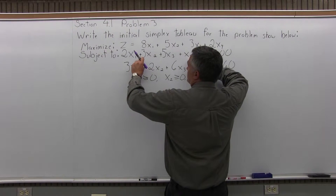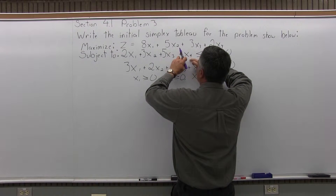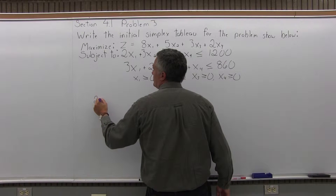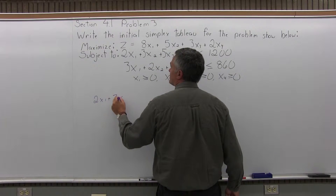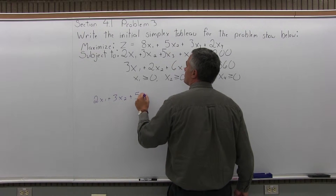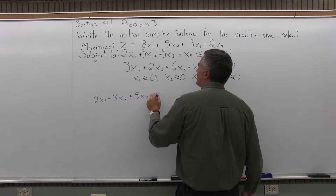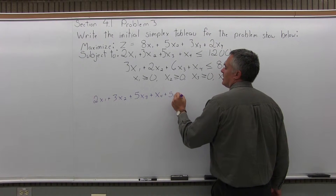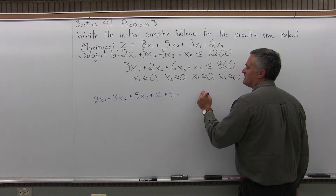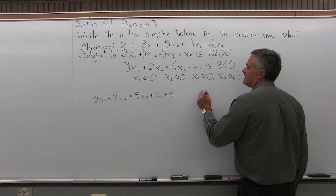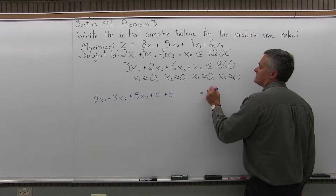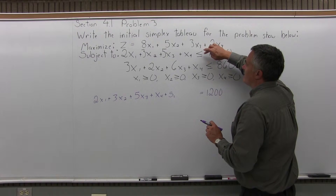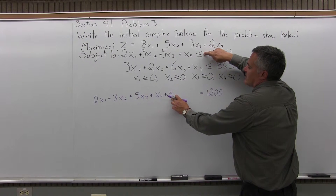I'll start with the first constraint: 2x1 plus 3x2 plus 5x3 plus x4 is less than or equal to 1,200, and I'm going to write the equation 2x1 plus 3x2 plus 5x3 plus x4 plus S1 equals 1,200. So the first constraint was changed from a linear inequality to a linear equation by adding a slack variable.